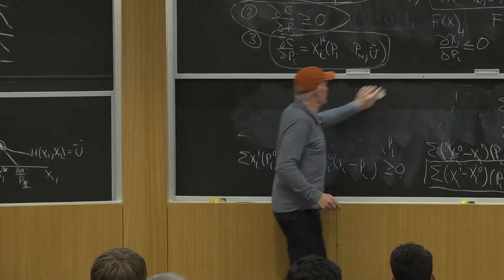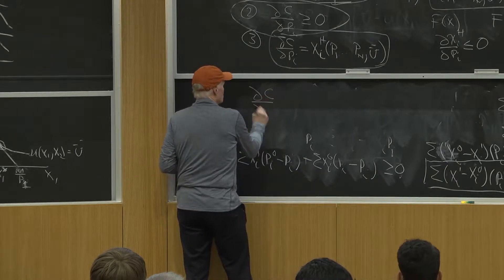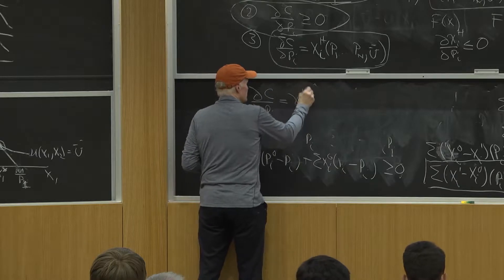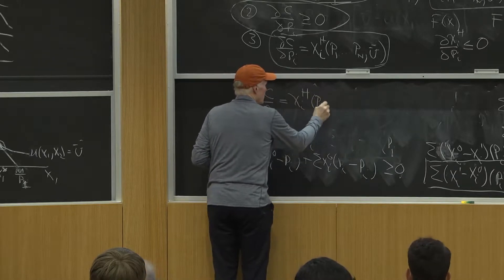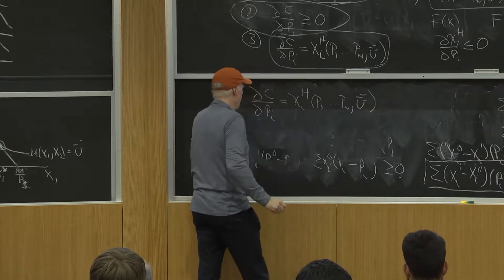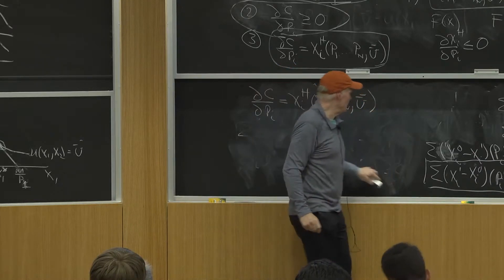we proved a minute ago that partial c partial pi equals x i h of p 1 up to p n u bar, right? We proved that last,